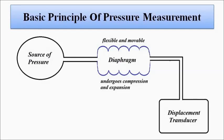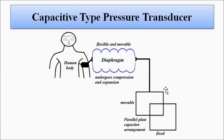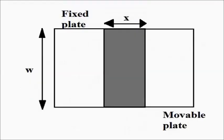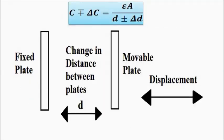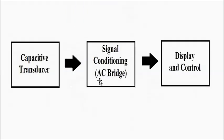So, to summarize: this is the capacitance transducer for pressure measurement. The diaphragm detects fluctuations in pressure, undergoes compression or expansion, and causes the movable plate to move, contributing to a change in overlapping area or change in distance. That causes a change in capacitance, which is converted to voltage and current by signal conditioning to get a display. I hope you like this video — please subscribe to Engineering Tutorial for more videos related to engineering, science, and technology. Thank you very much.